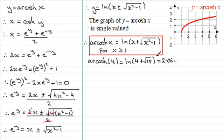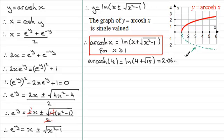You could try it on your calculator with the negative value, and you'd find that you get minus 2.06. This corresponds to a reflection of this curve in the x-axis. So taking the negative value gives you the lower curve, which is y equals the natural log of x minus the square root of x squared minus 1.